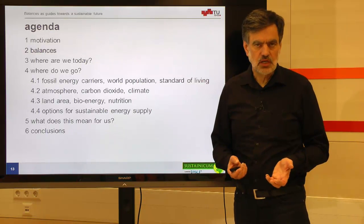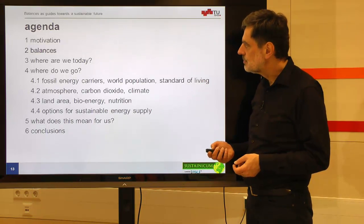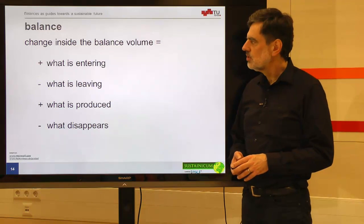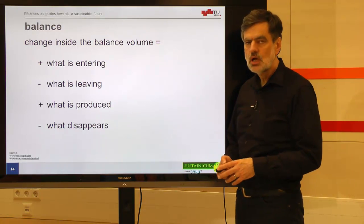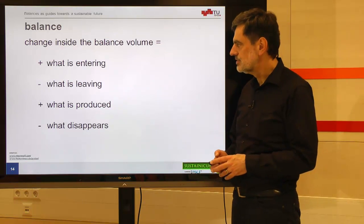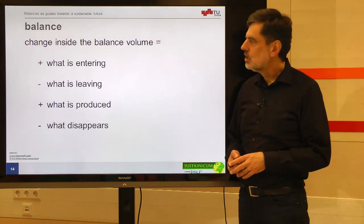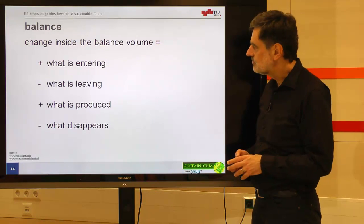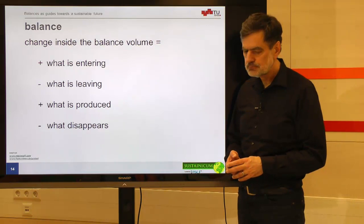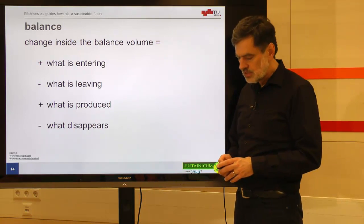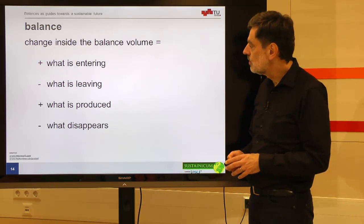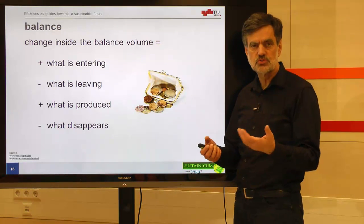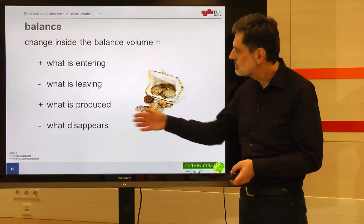Let me start directly with the way we usually write a balance. The change inside a balance volume equals what is entering plus what is produced minus what disappears. This looks very theoretical at first sight, so let's look at a simple example that everybody knows: a purse. We want to set up a balance for a purse and understand what the different contributions mean.